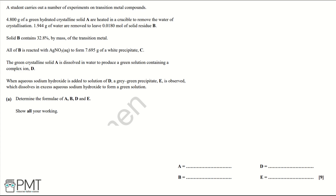Firstly, using our tests for ions, we know that if we react something with silver nitrate and produce a white precipitate, we're going to have chloride ions present. So we can use this information to help us work out the formula of B. What we need to do to start with is work out the moles of C, and C is going to be silver chloride, AgCl.